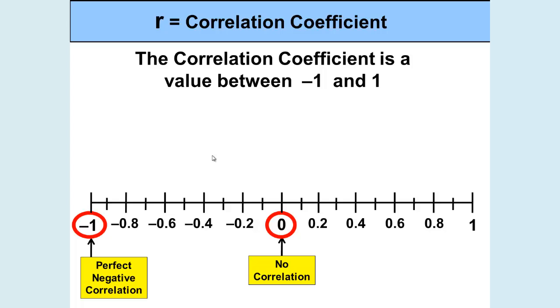If it falls at negative 1, there is a perfect negative correlation. If it falls at positive 1, there is a perfect positive correlation. Those are rare. Generally, we have lots of correlations that fall in between.